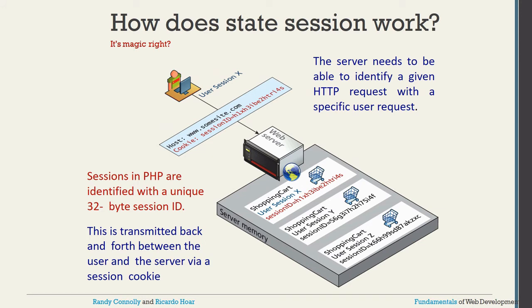Sessions in PHP are identified with a unique 32-byte session ID. The server needs to identify a given HTTP request with a specific user, and this session ID is transmitted back and forth between the user and server via a session cookie. For example, in a shopping cart, when one user adds a product, their session ID is unique; another user opening the same shopping cart page gets a different session ID — so the same page keeps different values based on each session ID.